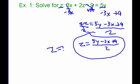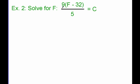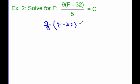Here's example 2. Solve for f in the equation 9 times (f minus 32) divided by 5 equals c. Go ahead and pause the video, try this one, and then watch me work it out. This is actually the formula for converting a temperature in degrees Fahrenheit into degrees Celsius. What we want to do is convert it so we can go the other way — we want to know what f equals. We could multiply out the 9 to start, but I want to rewrite this as 9 fifths times (f minus 32) equals c.